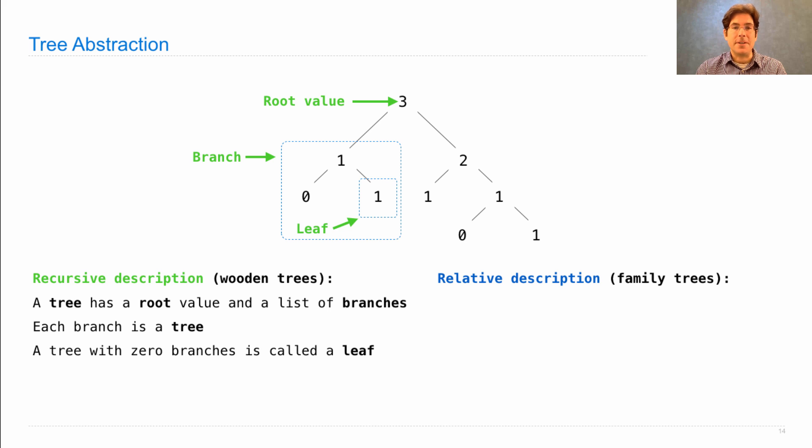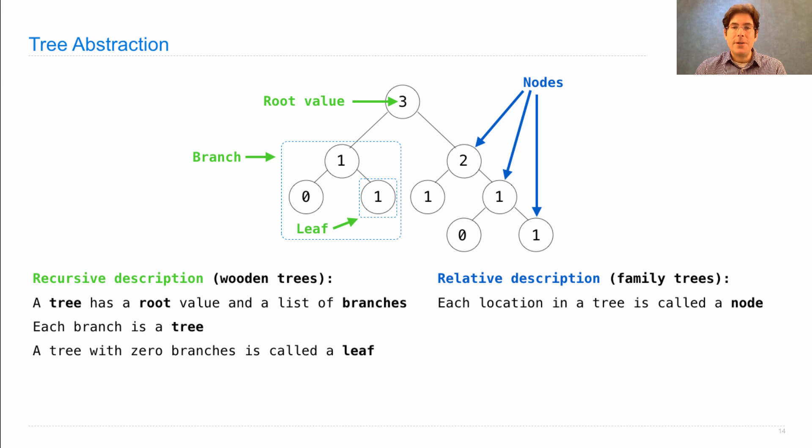This recursive description is sufficient to describe everything about a tree, but it's not always the most convenient. So we also use other terminology to talk about trees. Each location in a tree is called a node. Sometimes, even though a tree is nothing but a root and a list of branches, we need to talk about some value deep within the tree. The nodes are all the locations of the values, which are scattered throughout the branches or at the root.